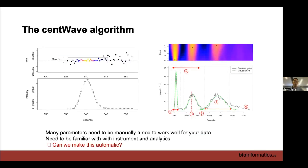The most important algorithm in XCMS is called CentWave. There's also a matched filter algorithm for low-resolution spectra. CentWave was designed around 2010 for high-resolution spectra and works very well, considering factors like peak height shape and how to define signals. It has about 13 or 14 different parameters to tune to find the best-performing combinations, which actually scared a lot of people away. In early metabolomics workshops, this parameter selection was the most challenging part.